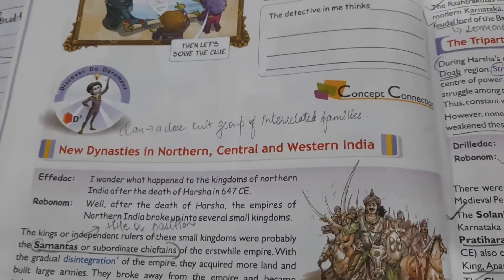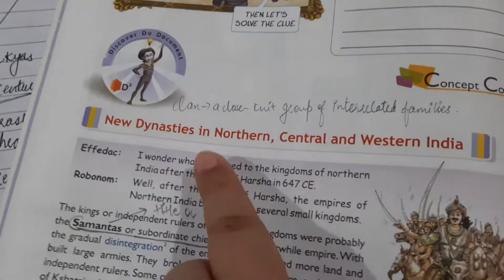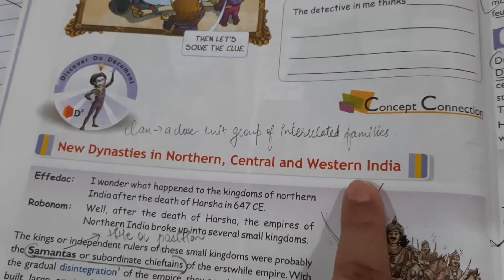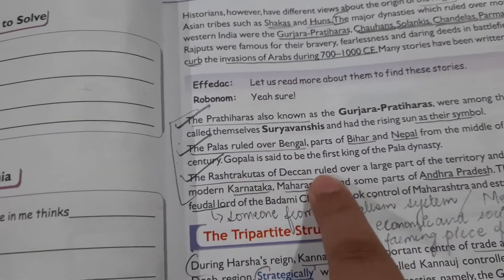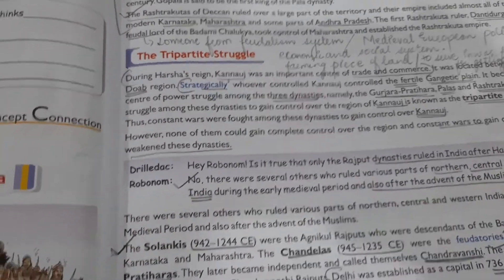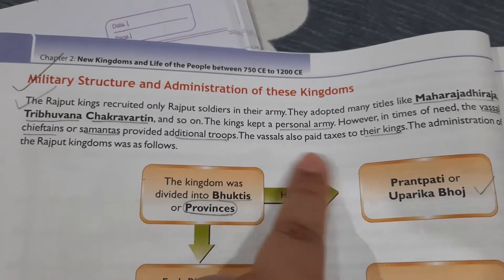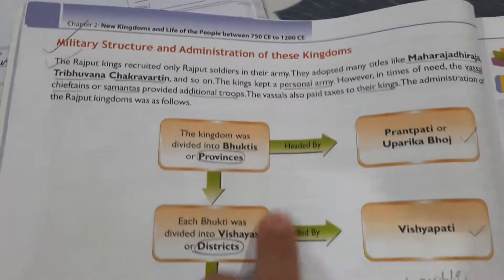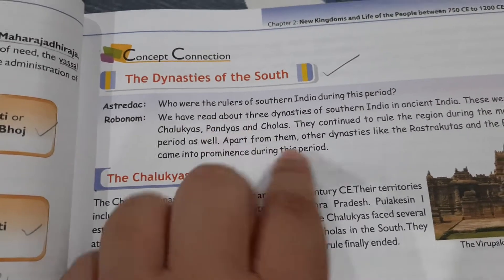Hello dear students, I am again here with the next topic of history today - the dynasties of the south. Let me give you a quick review of what we studied in our last video: the dynasties in north, central and western India. The main ones were the Gurjaras, the Palas, and the Rashtrakutas. We studied their struggle, military structure, where they got their army and additional troops, and also their administration. Today it's time to study the dynasties of the south.